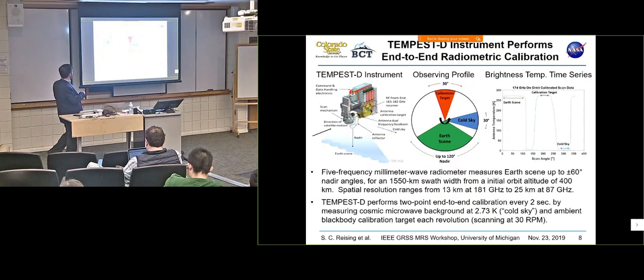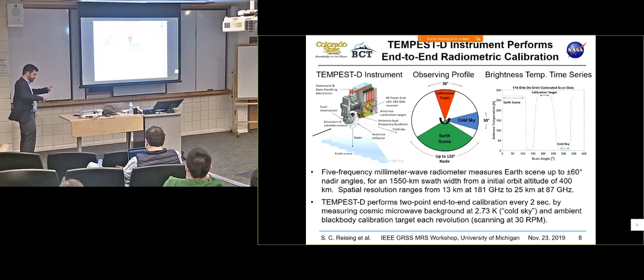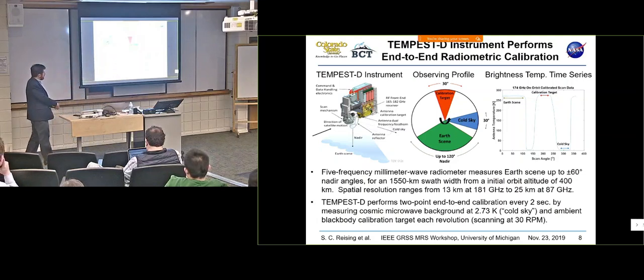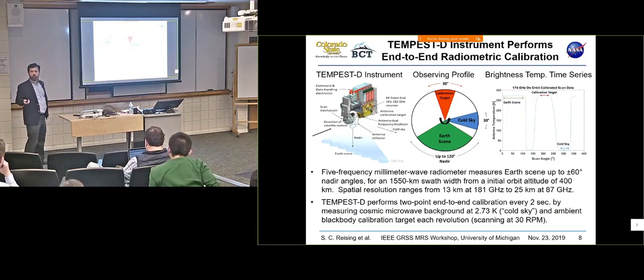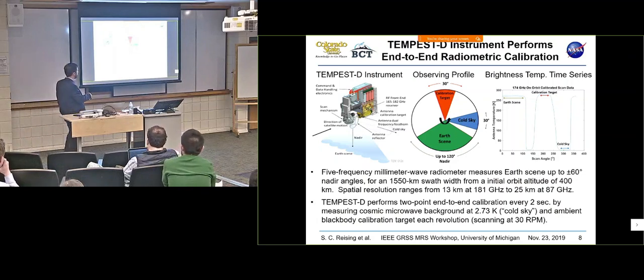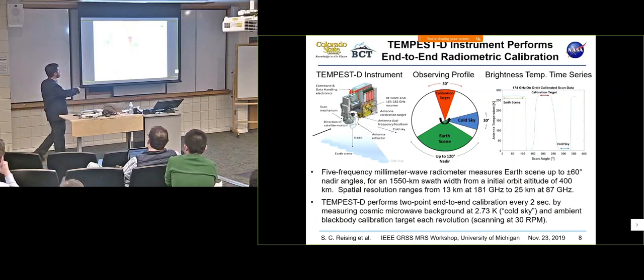A little more about the TEMPEST instrument. So microwave sounders tend to be cross-track scanning. So they're moving. If this is the direction of satellite motion, they're scanning like this. We're observing the Earth scene centered at nadir up to plus minus 60 degrees in angle in the Earth scene. And every revolution of that scanning happens every two seconds. So every two seconds, we are able to look out to the side and see the cosmic microwave background, which is very homogeneous at these frequencies, isotropic, and it's 2.7 Kelvin from the Big Bang.